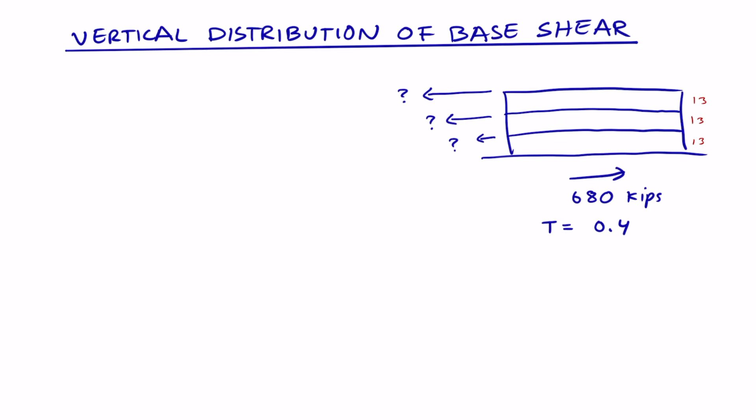How do we distribute base shear over each level of a multi-story building? Here we have our base shear, which is 680 kips.